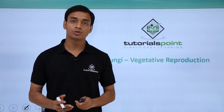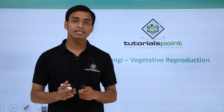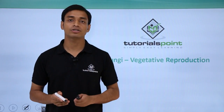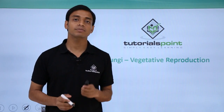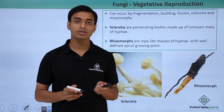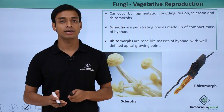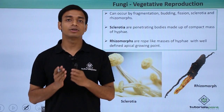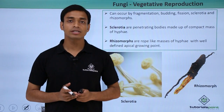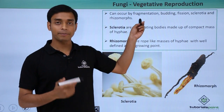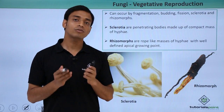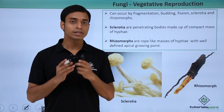Hello everyone, welcome to Tutorials Point. In this video we are going to talk about the various methods of reproduction performed by the kingdom Fungi. First we are going to talk about the vegetative mode of reproduction. This can happen in various ways: by fragmentation, budding, fission, formation of sclerotia, or formation of rhizomorphs.